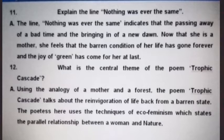The eleventh question: explain the line 'Nothing was ever the same.' The line indicates the passing away of a barren time and the bringing in of a new dawn. Now she is a mother. The varying condition of her life has gone forever and the joy of green has come for her at last.